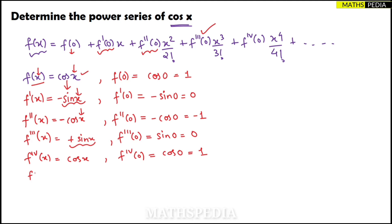We can find one more term if needed. The fifth derivative of cos x is -sin x, and substituting 0 gives -sin(0) = 0. You continue finding terms up to however many the question specifies — six, seven terms, and so on.